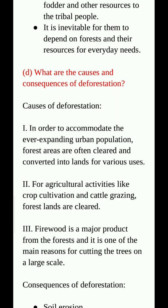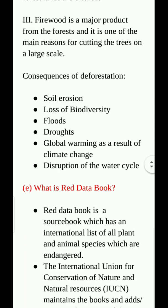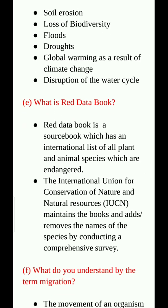What are the causes and consequences of deforestation? Causes of deforestation: in order to accommodate the ever-expanding urban population, forest areas are often cleared and converted into lands for various uses. For agricultural activities like crop cultivation and cattle grazing, forest lands are cleared. Timber is a major product from the forest and is one of the main reasons for cutting trees on a large scale. Consequences of deforestation: soil erosion, loss of fertility, flood, drought, global warming, climatic change, and disruption of the water cycle.